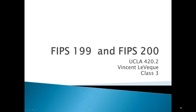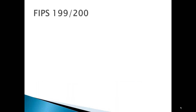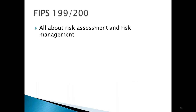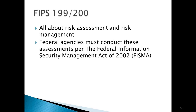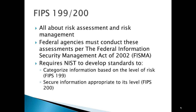FIPS 199 and FIPS 200 are information categorization or classification standards for civilian federal government data. They feed into the NIST Special Publication 800-30 risk assessment, which requires use of specific risk categorization of the particular data you're looking at. FIPS 199 and 200 are all about risk assessment and risk management. Federal agencies must conduct these risk assessments per the Federal Information Security Management Act of 2002, or FISMA. That act requires NIST — the National Institute of Standards and Technologies — to develop standards to categorize information based on a level of risk, which is FIPS 199, and to secure that information appropriate to that level.